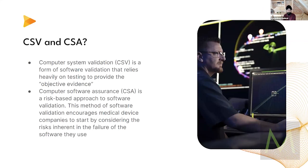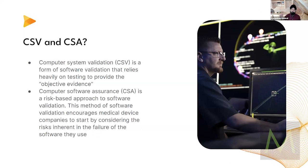The first thing we need to start off with is CSV and CSA. CSV — computer software validation — is a form of software validation that relies heavily on testing to provide objective evidence. CSV is the old system. The FDA is moving towards a more sensible system, which is computer software assurance — CSA — which takes a risk-based approach. If something is of a lower risk, you don't need to sit there doing 100 different tests. It's important that people understand the difference.